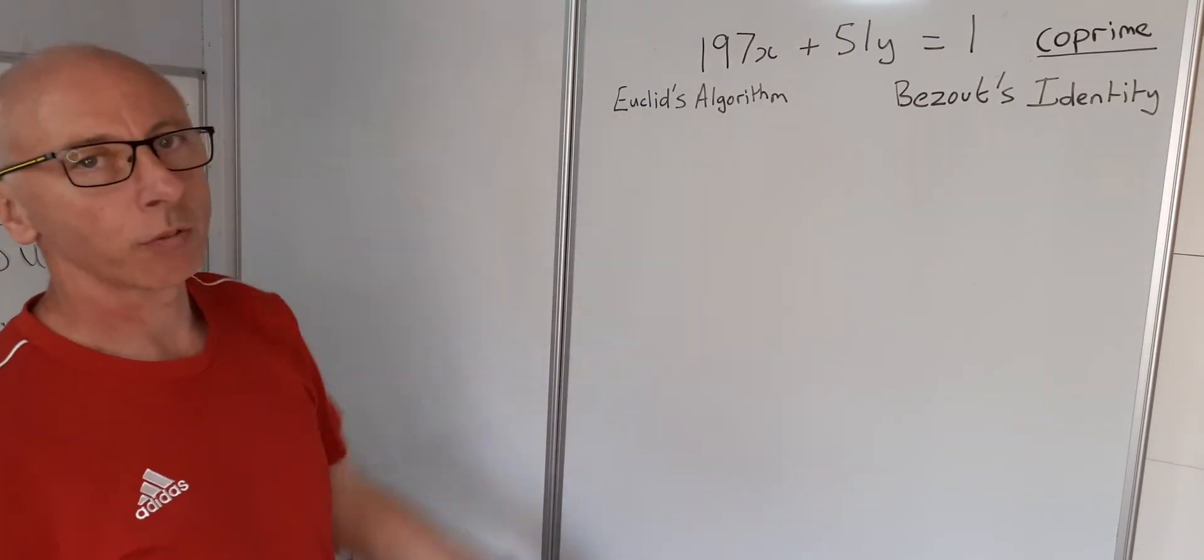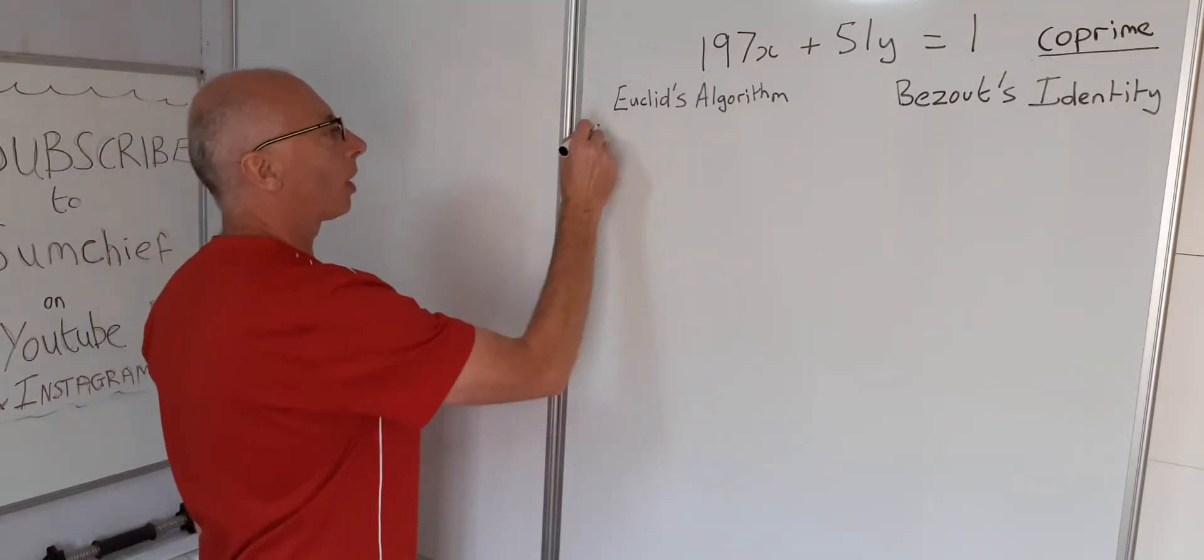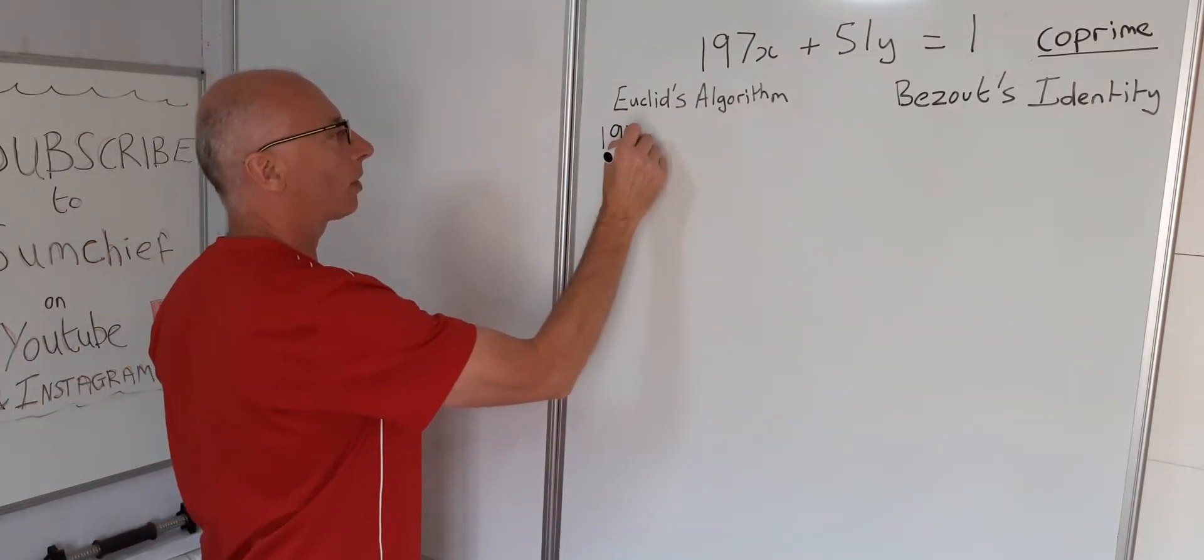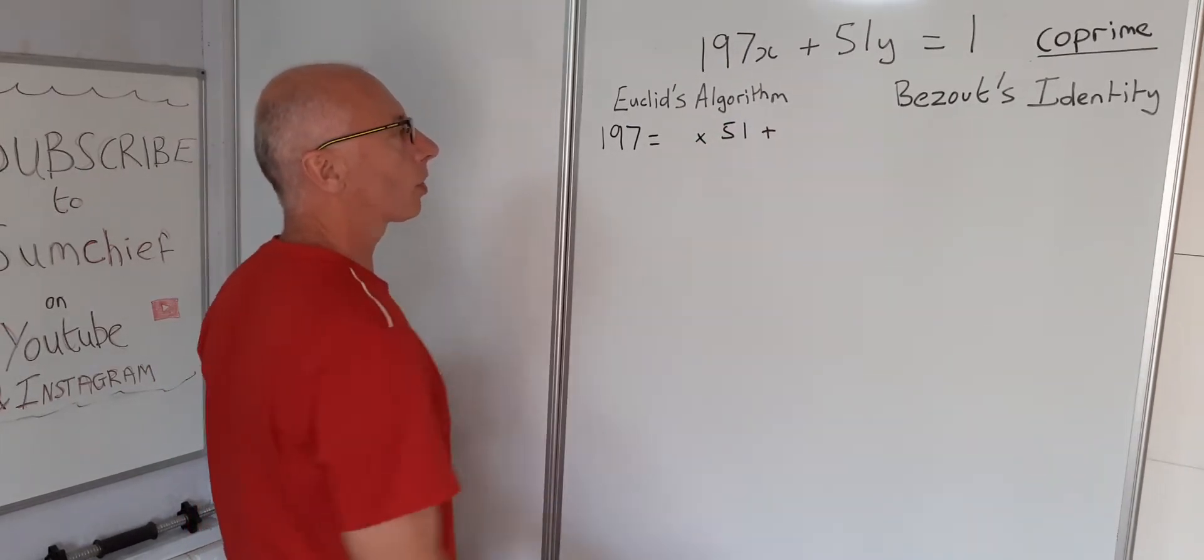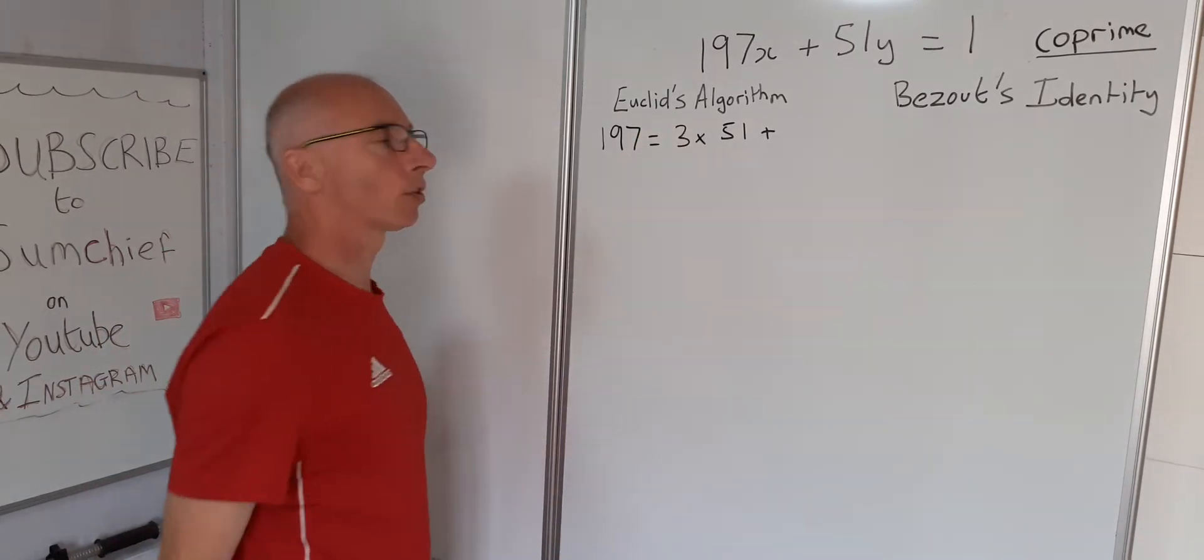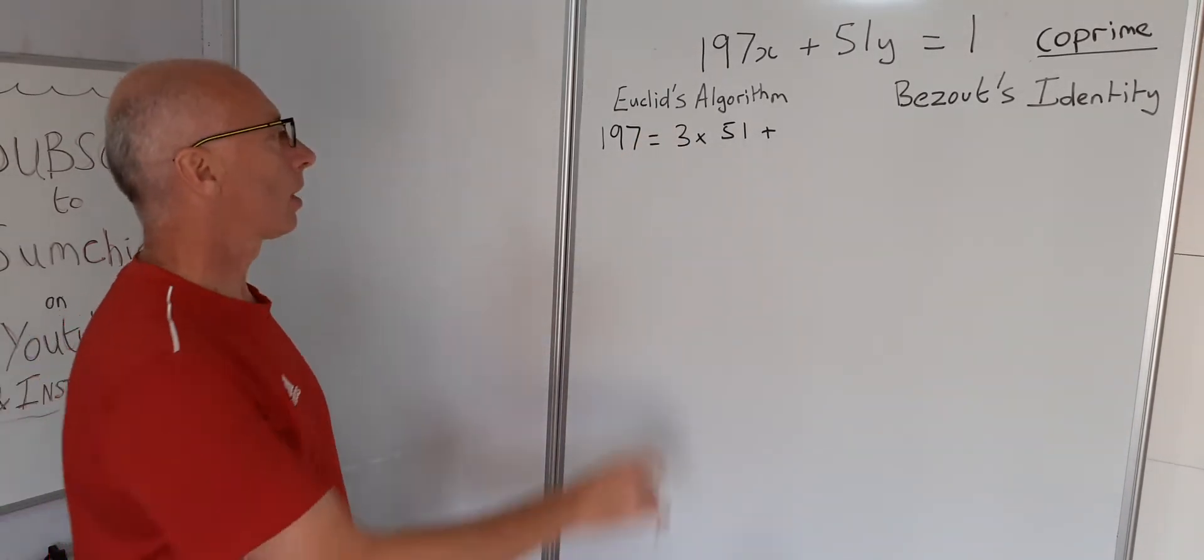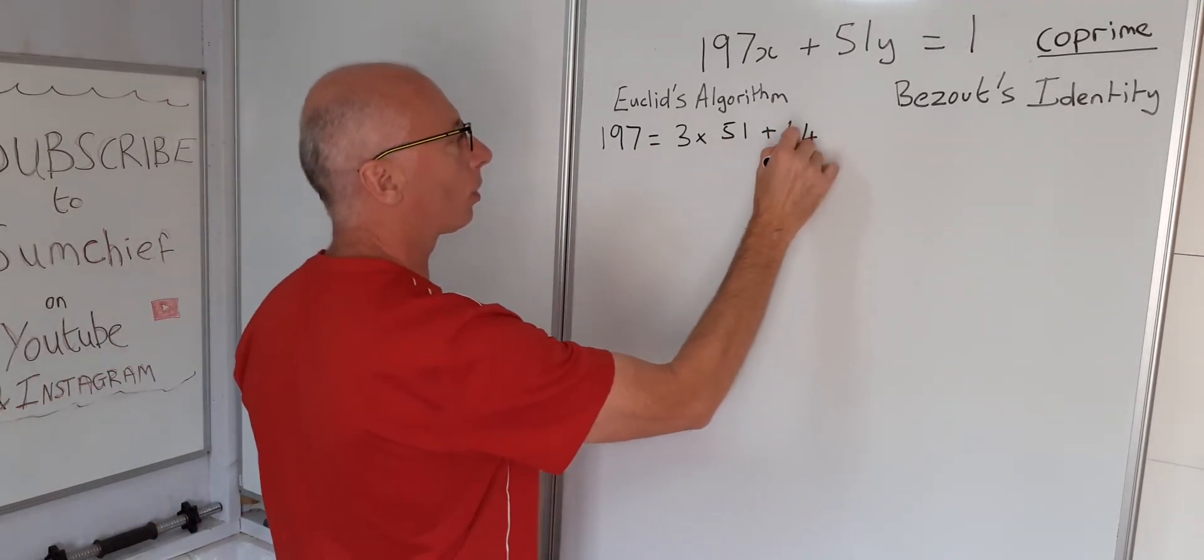So how are we going to go about finding that? Well, we're going to start off with Euclid's algorithm. So starting off with the largest number 197, that equals something times 51 plus a remainder. So we know 3 times 51 is 153, so now we're going to have 197 equals 3 times 51 plus 44 remainder.